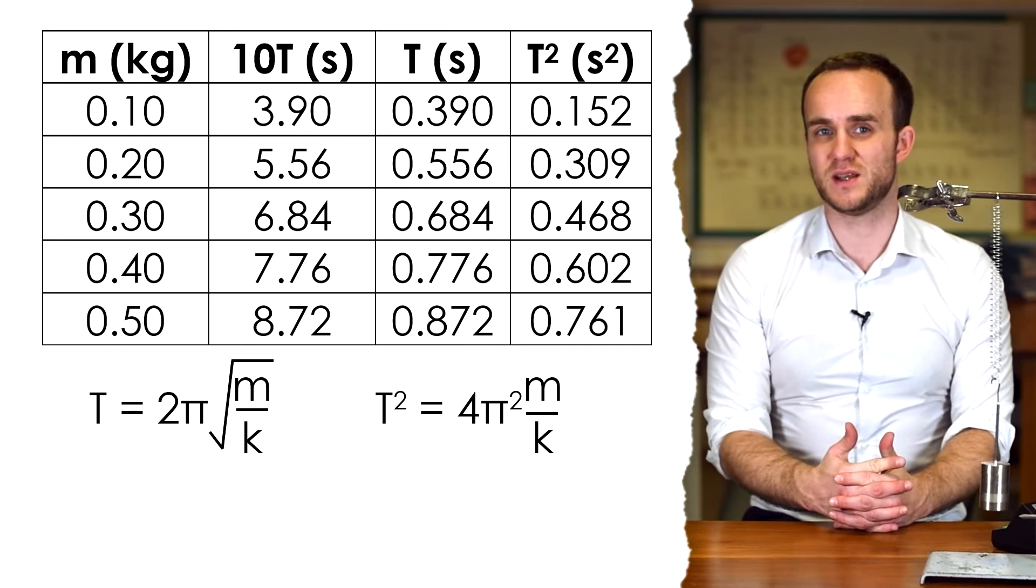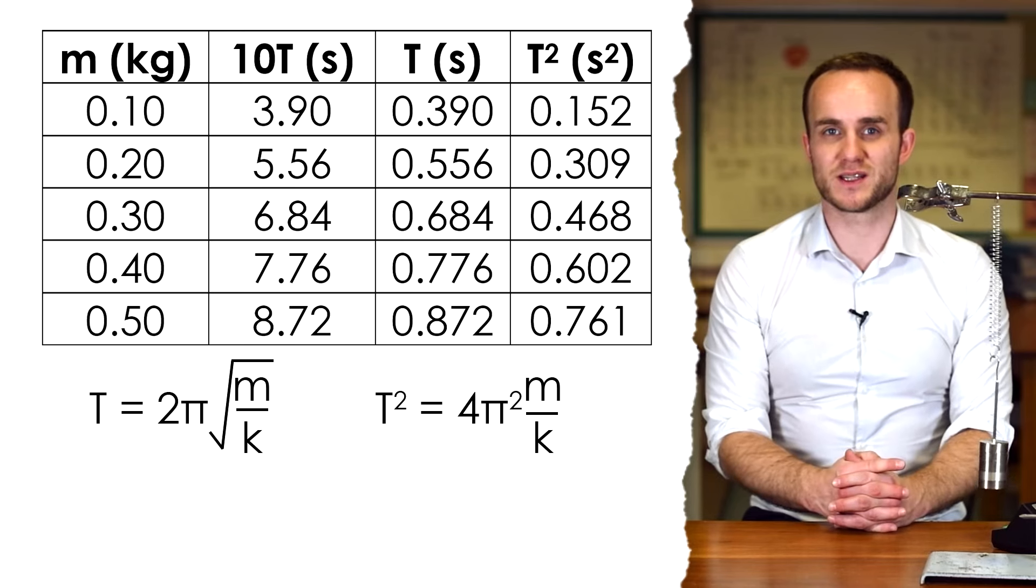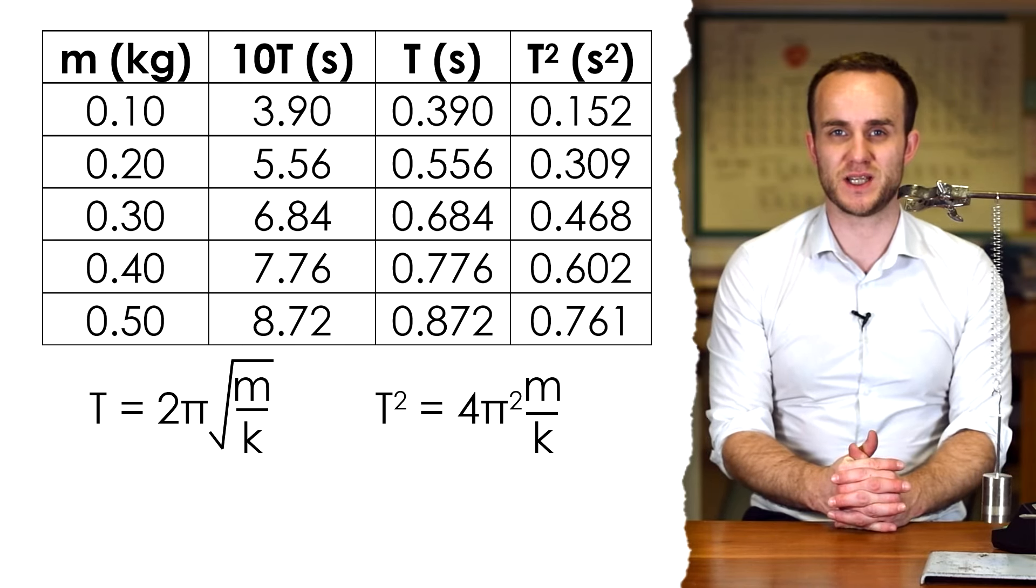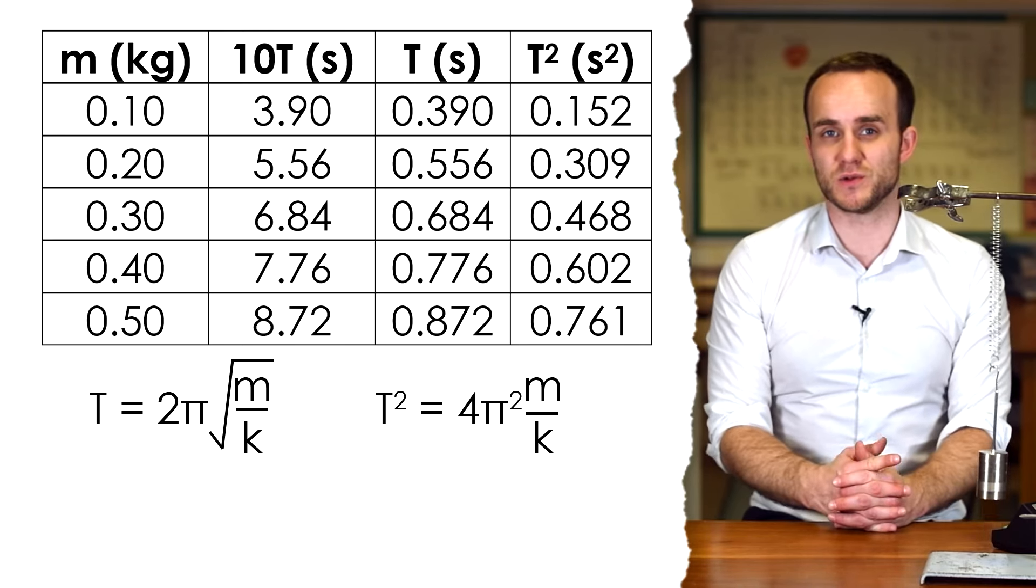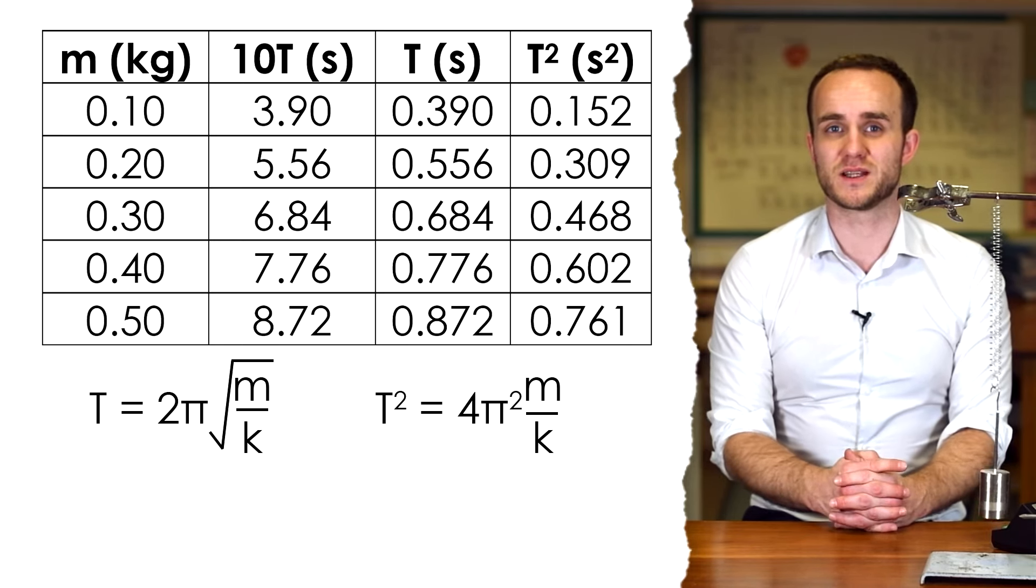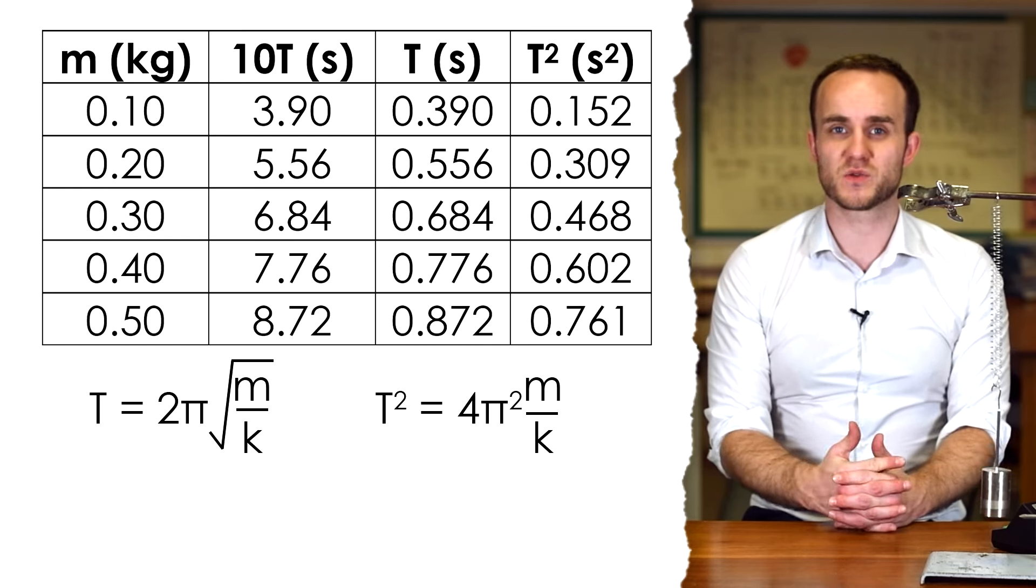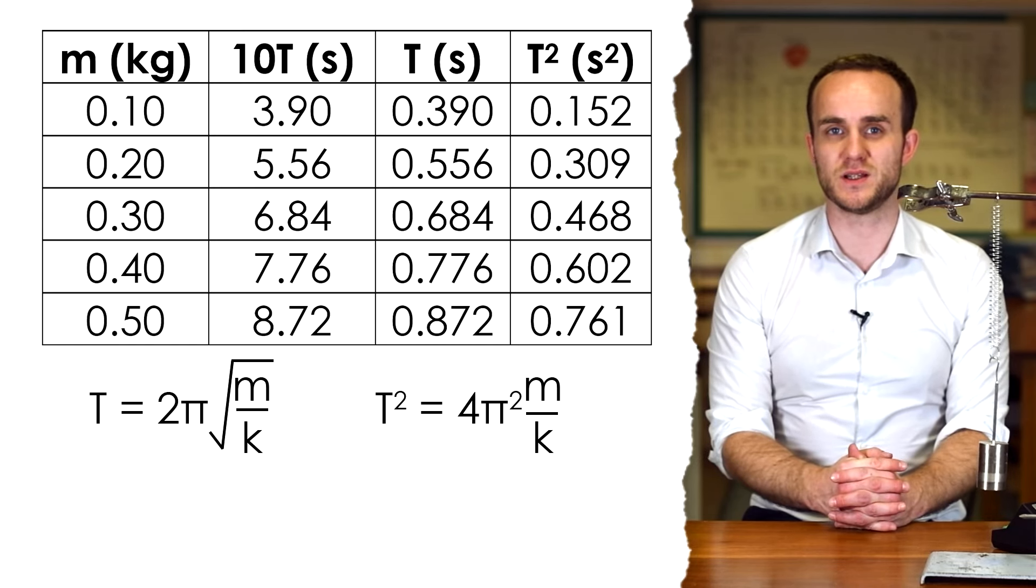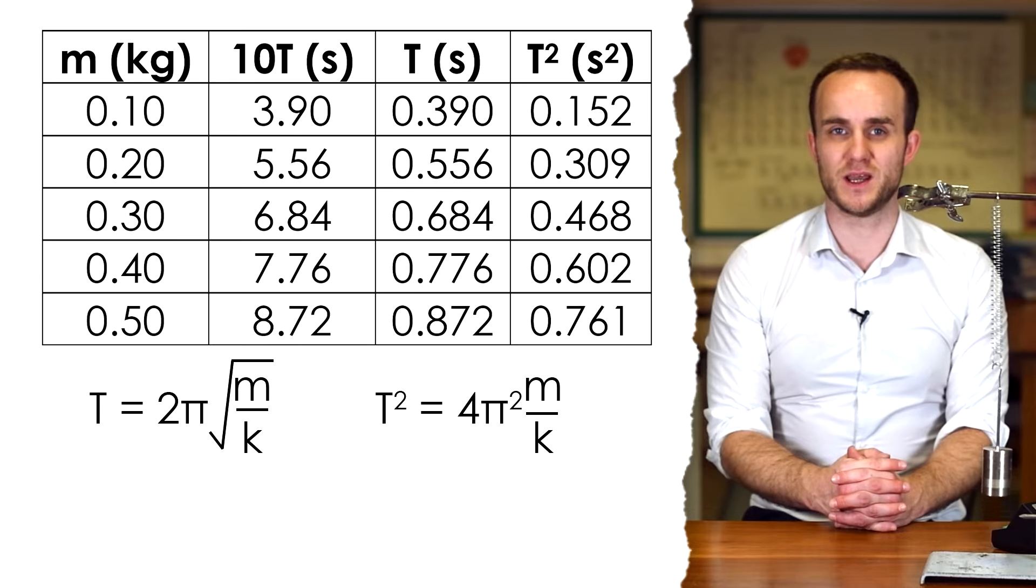I'm going to plot not t against m, because similarly to the pendulum, it's not t proportional to m. The equation is t equals 2π times the square root of m over k, where m is the mass and k is the spring constant. So squaring the whole thing, t squared equals 4π squared times m over k.